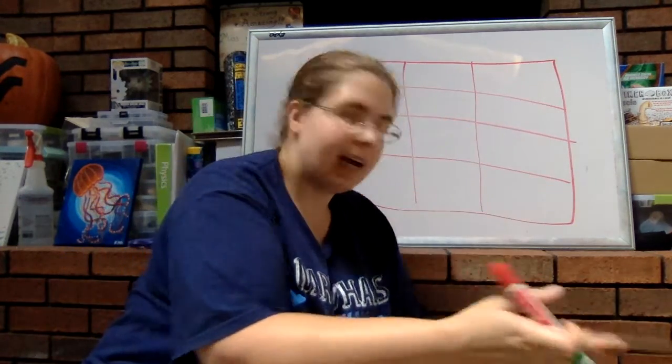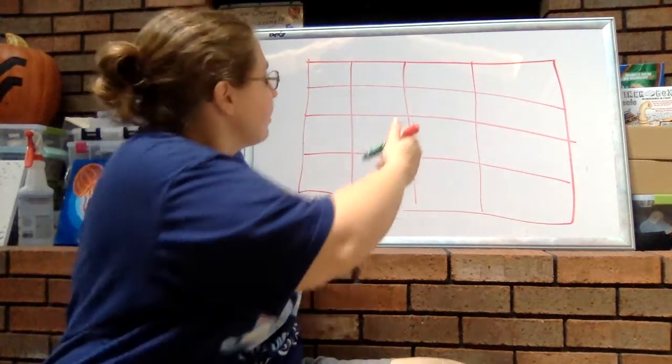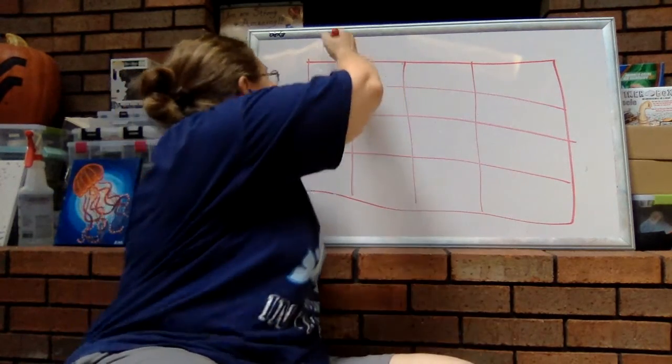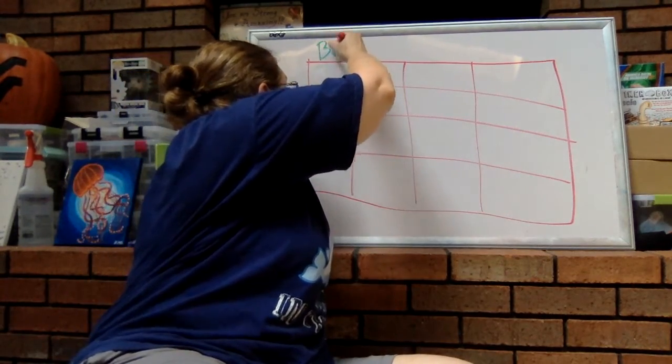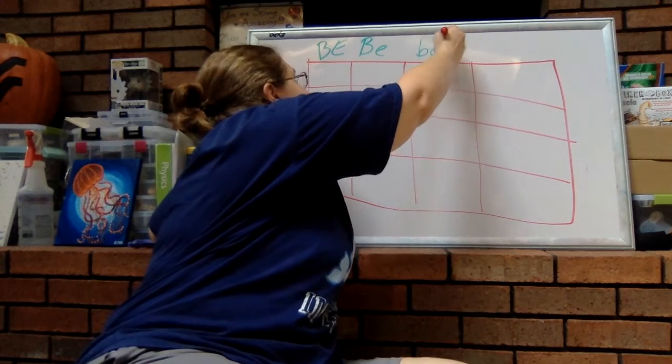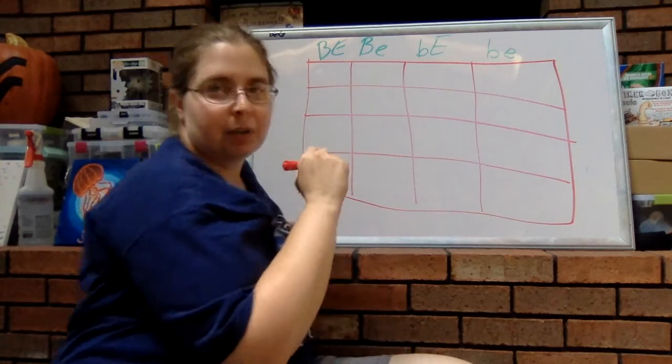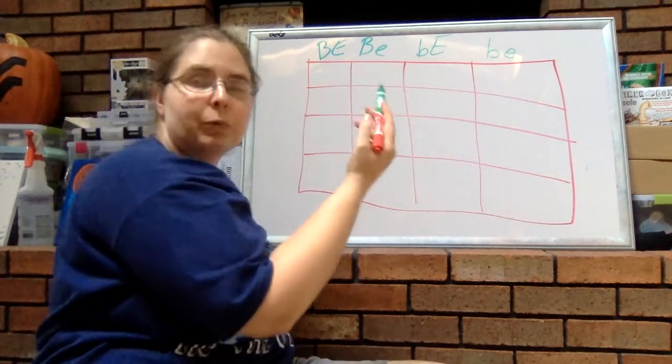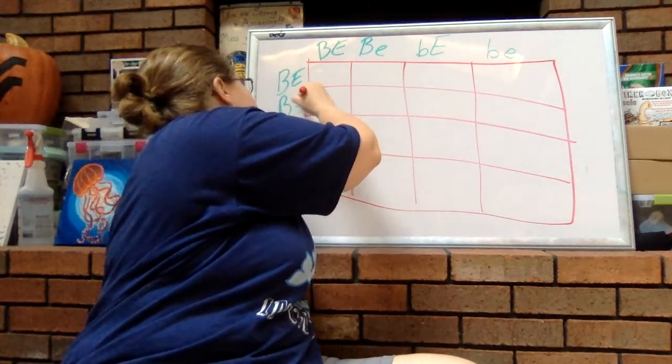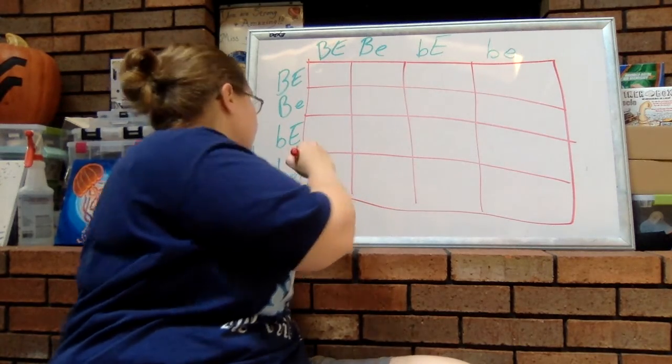So I'm going to take these and I'm going to put them on my dihybrid cross that you see behind me. Without disturbing Ripley too much, so bear with me. Big B big E, big B little E, little B big E, little B little E. I'm also going to put that on this side here, because remember we said both parents are heterozygous for both traits.